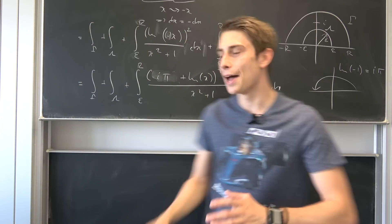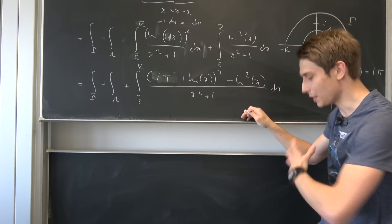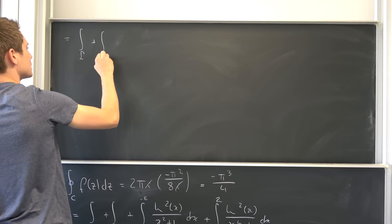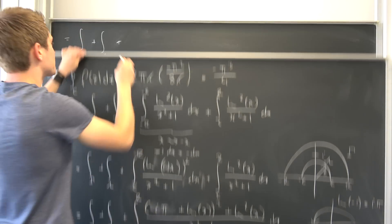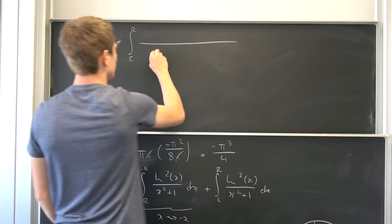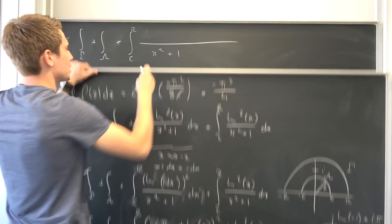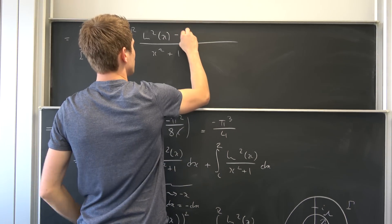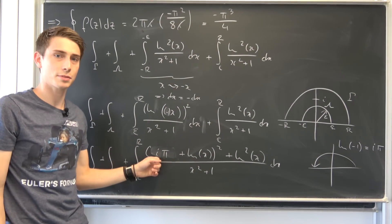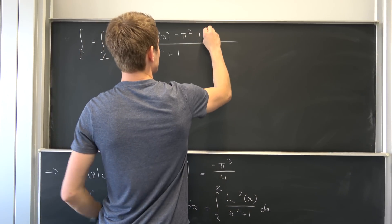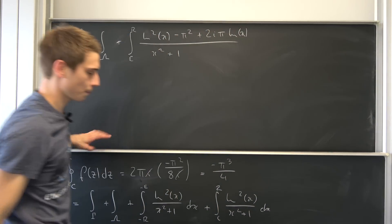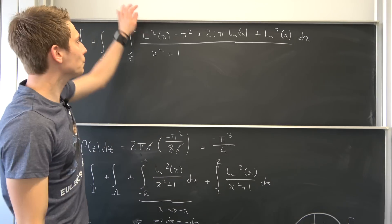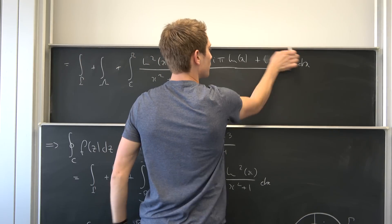Now we can square this thing. In the video with Tibbys I actually made a little mistake here — I forgot the factor of 2. I'm not going to do that today. So expanding, the numerator becomes: natural log squared of x, plus 2·(i·π)·ln(x), plus (i·π)² which is −π². So we end up with gamma integral plus lambda integral plus the integral from epsilon to r of [natural log squared of x − π² + 2·i·π·ln(x)] over (x² + 1) dx.